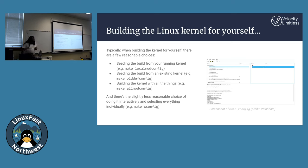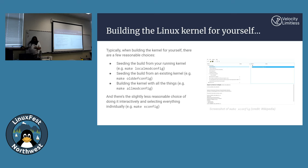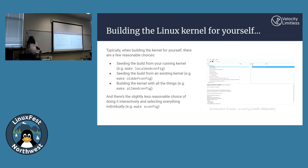When you're building the kernel for yourself, you have a few reasonable choices. Most of the time what people do is seed the build configuration from your running kernel — this is 'make localmodconfig'. It'll just get the config from your distribution, which is usually installed in /boot. Or you can seed it from an existing kernel you've made before. Or you can build the kernel with all the things, which I really don't recommend — that's 'make allmodconfig' or 'allyesconfig'.